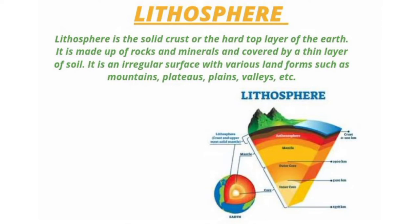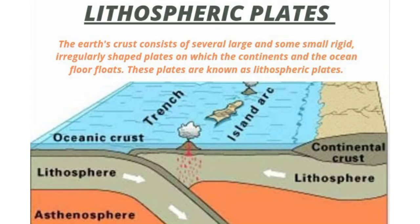Lithospheric plates. The earth's crust consists of several large and small, irregularly shaped plates on which the continents and the ocean floor float. These plates are known as lithospheric plates.